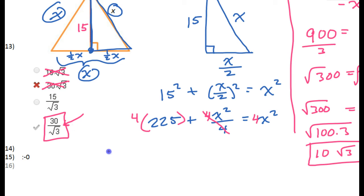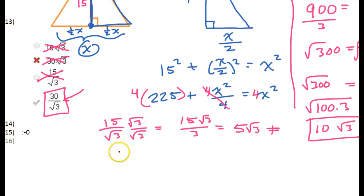Well, let's rationalize the denominator. If I have 15 over radical 3, if I want to see another form of this, I can just multiply by radical 3 over radical 3. That's going to give me 15 radical 3 over 3. A radical times itself is just the number inside. And that's going to give me 5 radical 3. 15 divided by 3 is 5. 5 radical 3 does not equal 10 radical 3. So that's not the answer either.